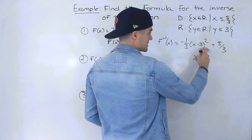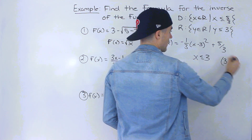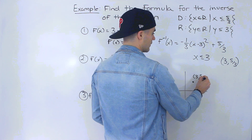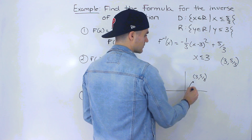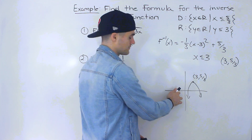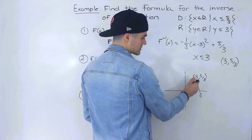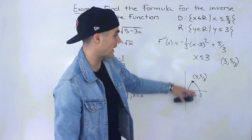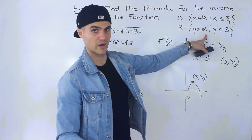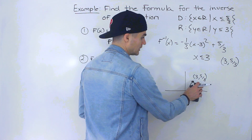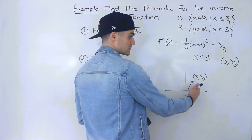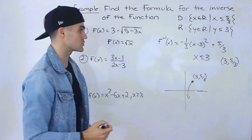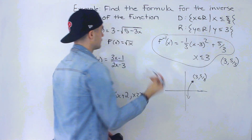This parabola has a vertex at (3, 5/3) and opens downward since the a value is negative. The domain of the full parabola would be all reals, but we restrict to x ≤ 3 — just the left leg. The range is y ≤ 5/3, which matches the domain of the original function (x ≤ 5/3). That is the final answer for number one.